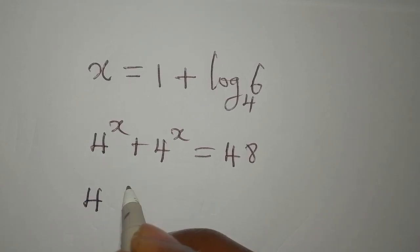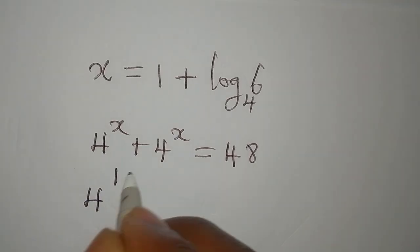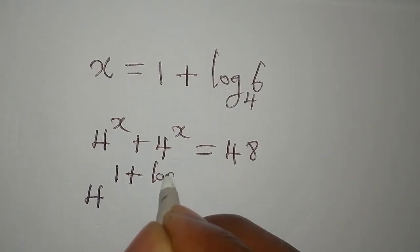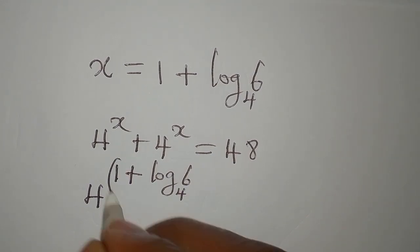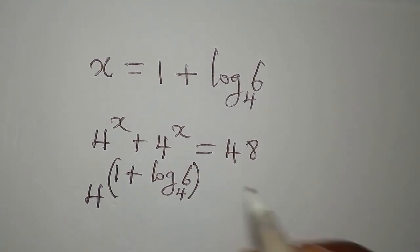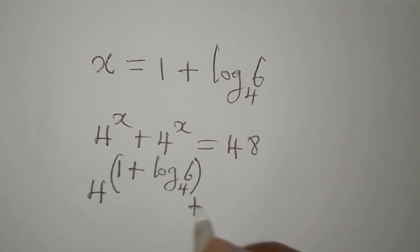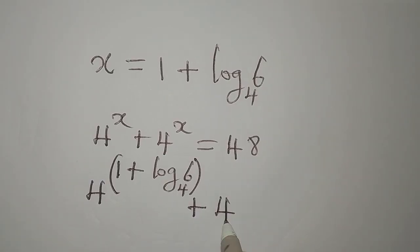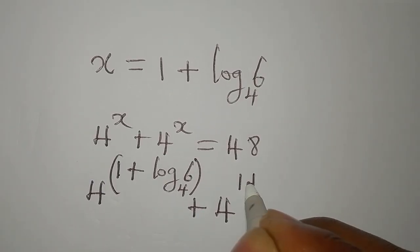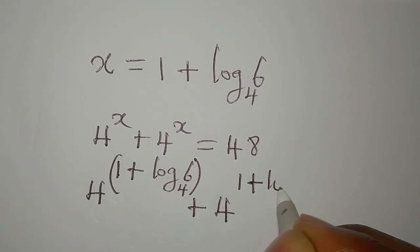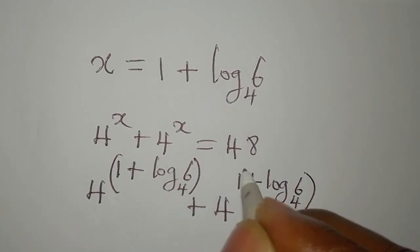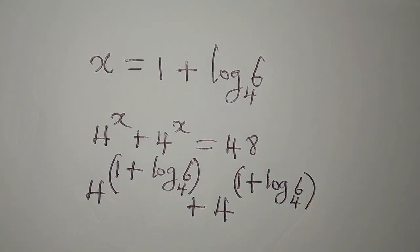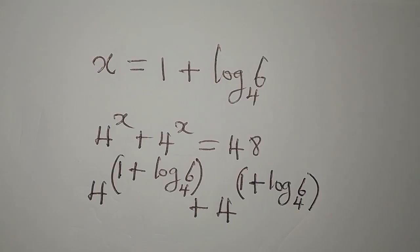Substituting, we have 4 to the power of (1 plus log 6 to base 4) — remember the whole of this expression is the power — so this term appears in two places: 4^(1 + log₄6) plus 4^(1 + log₄6). We need to check whether this gives us 48.